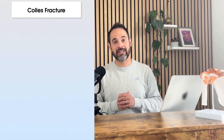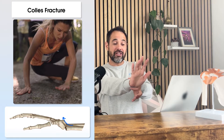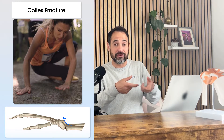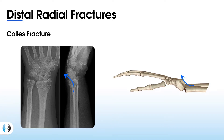Colles' fractures are the most common form of distal radial fracture, and most typically occur when someone falls and breaks their fall with their wrist in extension. This leads to dorsal angulation of the distal radius — you can imagine the radius buckling dorsally, with the distal fragment also moving dorsally towards the back of the hand. Here we can see an example of a Colles' fracture on x-ray, showing that dorsal or posterior angulation of the distal radius, which is consistent with the diagram also shown on screen.